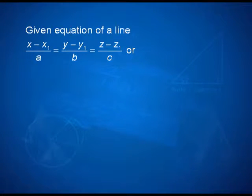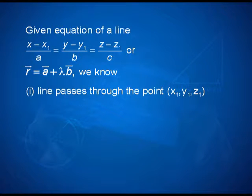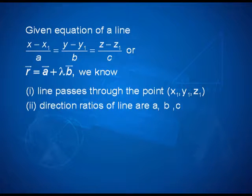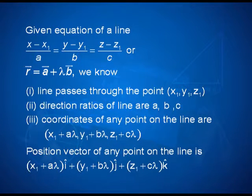Let us consolidate what we have discussed. If the equation of a line is known in vector or Cartesian form, certain information is immediately available. From (x − x₁)/a = (y − y₁)/b = (z − z₁)/c, or r = a + λb, we immediately know a point through which the line passes — namely (x₁, y₁, z₁) — and the direction ratios a, b, c. We also know coordinates of any general point on the line: (x₁ + aλ, y₁ + bλ, z₁ + cλ). For a specific condition, λ can be calculated to find a specific point on the line.